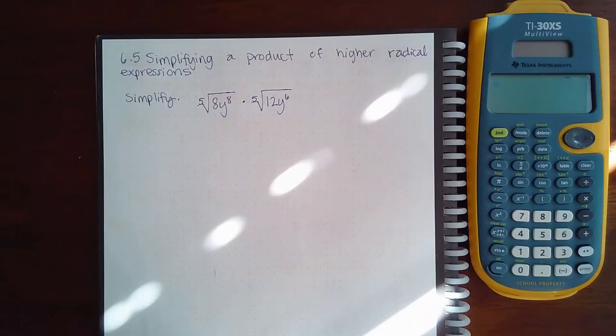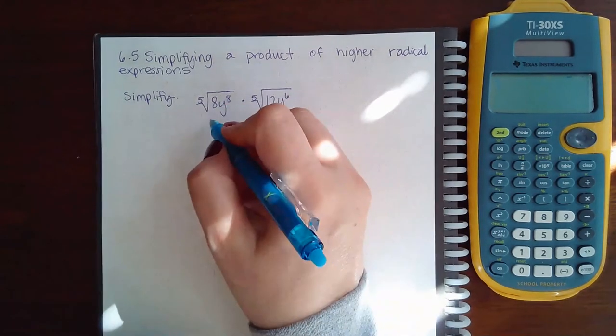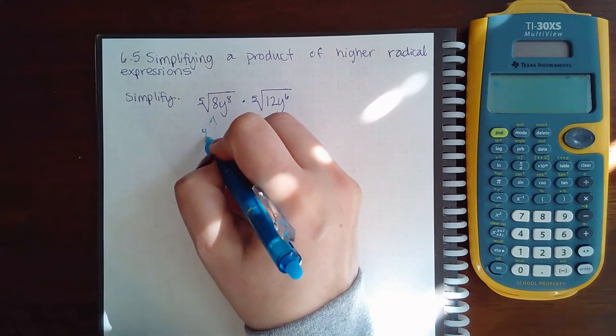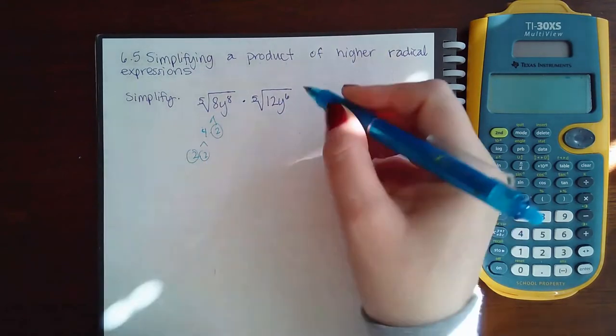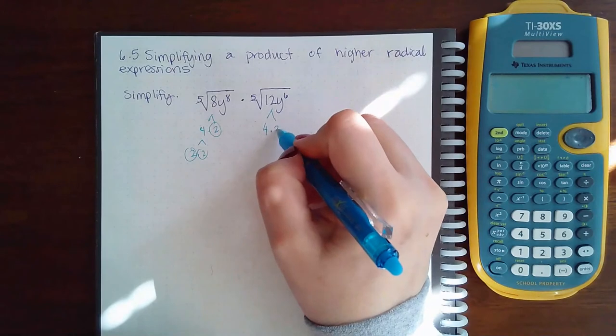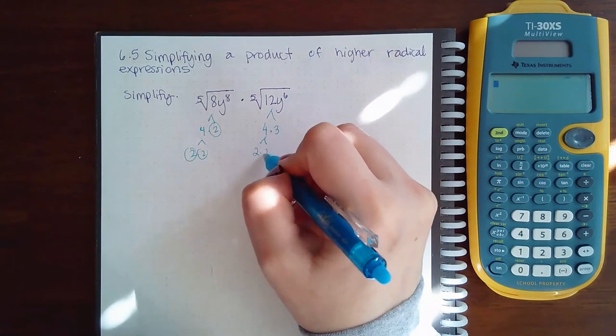Here we have 6.5 simplifying a product of higher radical expressions. So same thing: this is 4 × 2, which is 2 × 2. There's all my primes. Here I get 4 × 3, which is 2 × 2.